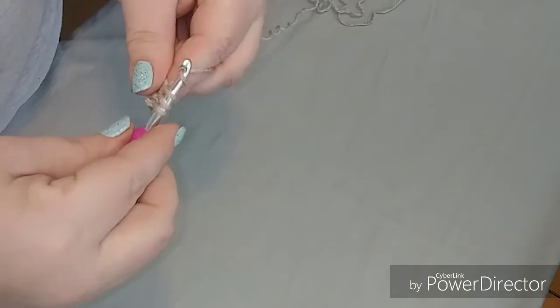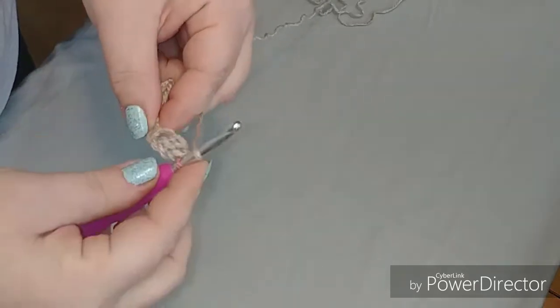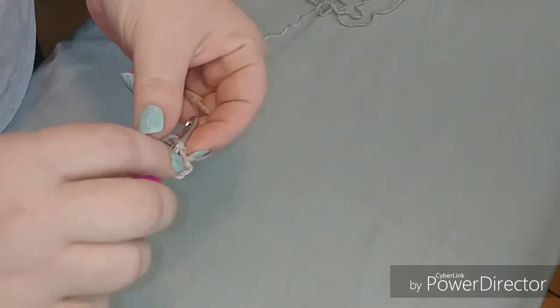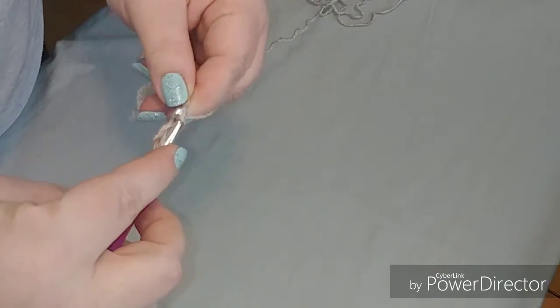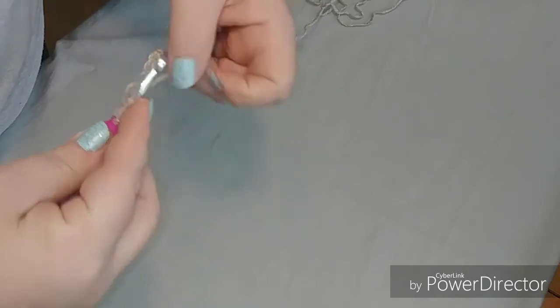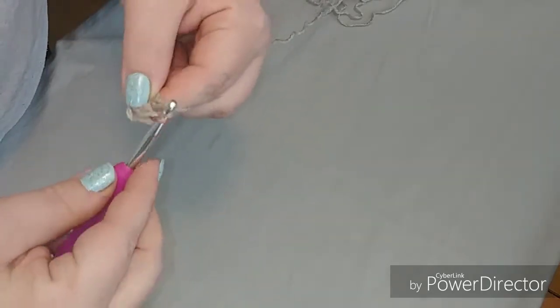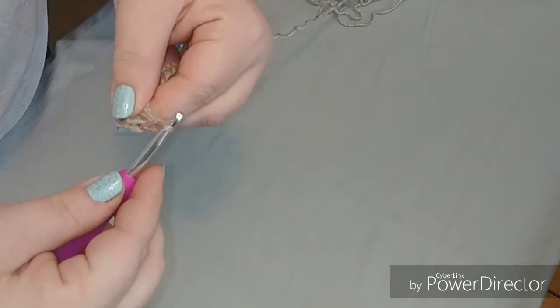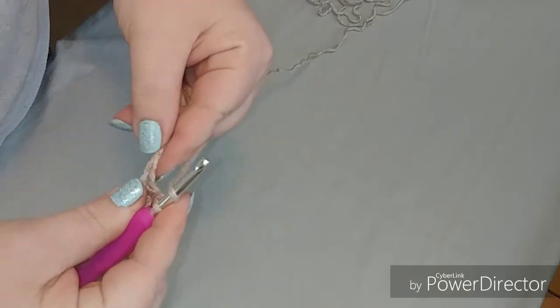Wrap, pull through two, pull through two. Okay, show you again. Wrap, put it through the chain space, wrap, pull it through the chain space. Then you should have three on your hook. Wrap, pull through two, wrap, pull through two. Okay, we'll just do this till the end of this chain here.